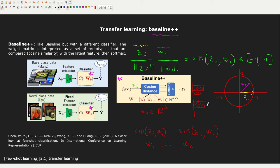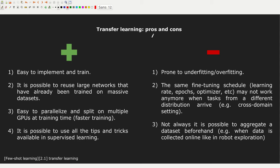You might wonder why not just use transfer learning — baseline++ is pretty good. The positives of this transfer learning approach are that it's very easy to implement and train. It's also possible to reuse very large pre-trained networks from Facebook or Google and just fine-tune the last layer on the testing tasks. Additionally, it's easy to parallelize across multiple GPUs since you have a standard dataset that can be allocated on multiple GPUs quite easily.